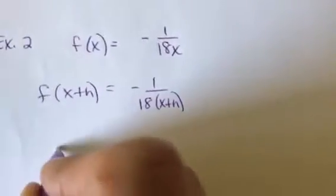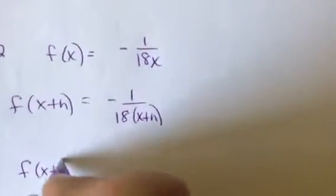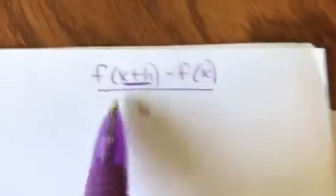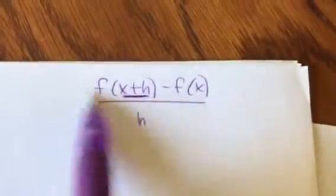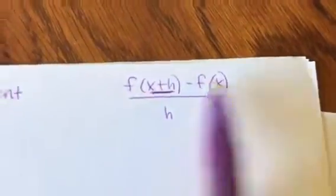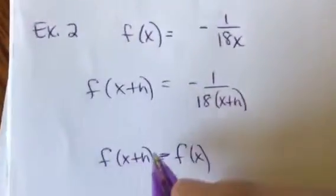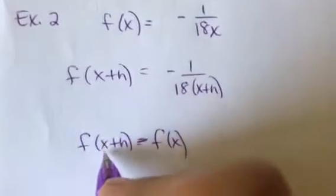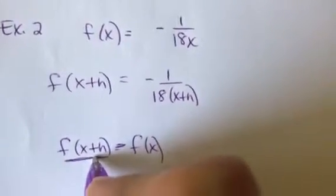So when I do this part, I'm just going to ignore the part that says over h. I'm going to ignore this for right now. I'm just going to find my numerator for right now. Otherwise, this one's going to get kind of ugly because I'm dealing with fractions. So, I already found this, f of x plus h.